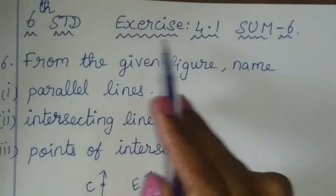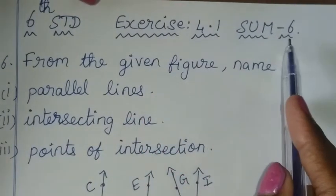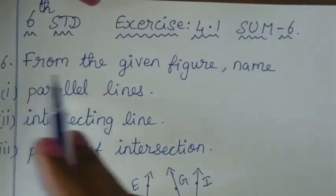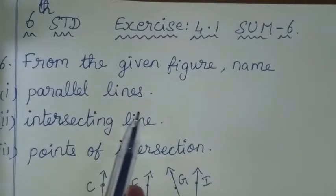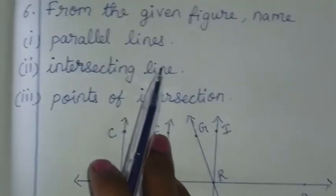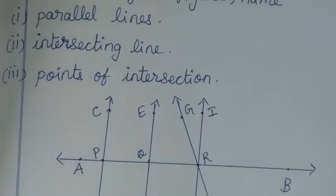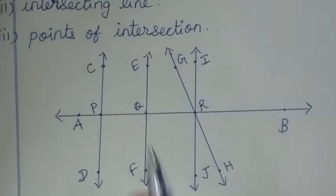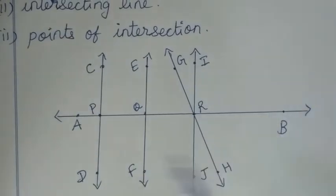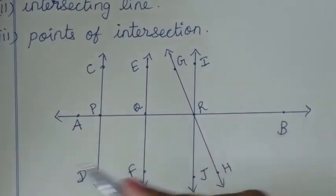Hello children! In this exercise 4.1, Sum Number 6, from the given figure, name the Parallel Lines, Intersecting Lines, and Points of Intersection. In this picture, you can see Parallel Lines, Intersecting Lines, and Points of Intersection.